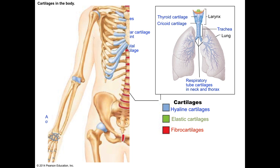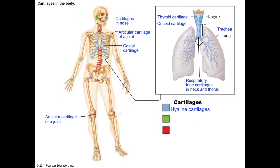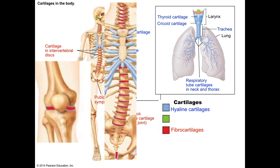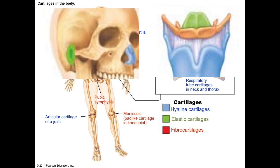Cartilage covers the ends of bones at the movable joints for cushioning and also connects the ribs to the sternum. Cartilage provides flexible support, as it does in keeping your airways open in the trachea. Add more collagen to the mix for strength and cartilage acts as a shock absorber between weight-bearing joints. Or add some elastic fibers and you have a material that provides structural support while tolerating repeated bending.